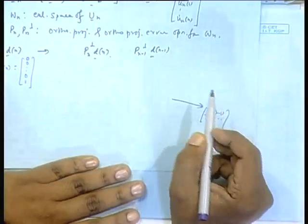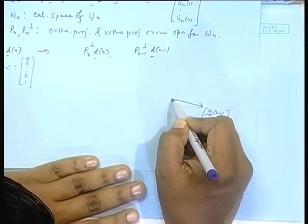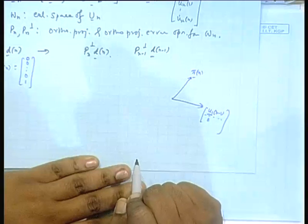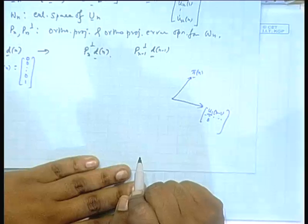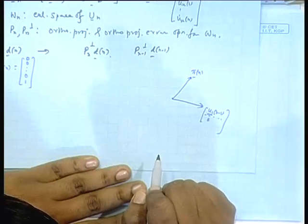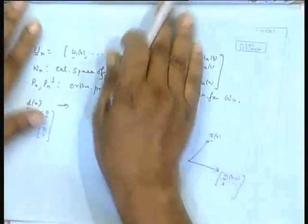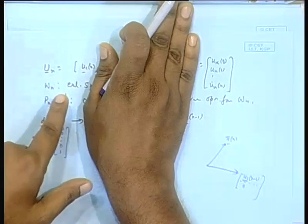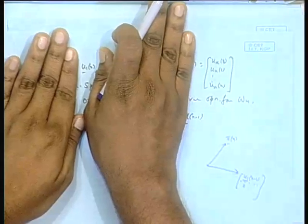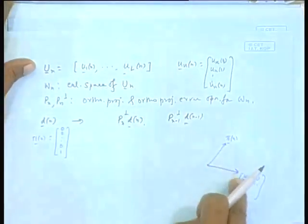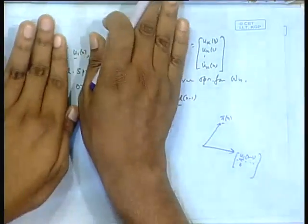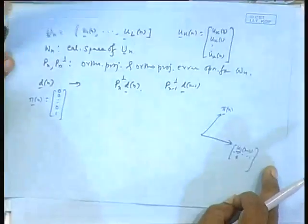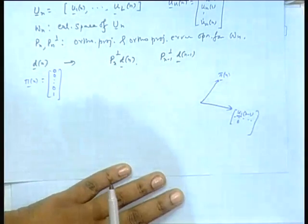Right now I am taking only this case where u_n is this one vector. Here p_n and p_n_perpendicular are the projection and error operators corresponding to the space spanned by only one vector. I will be using that notation. I will give some clarity through this graphical treatment, then I will come to the general case where only one column vector is present as a special case.